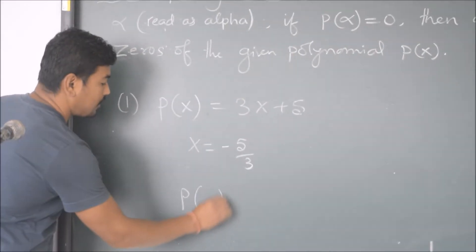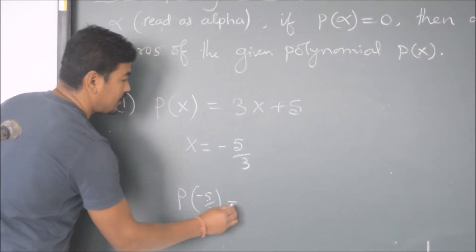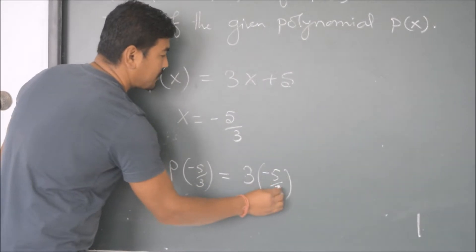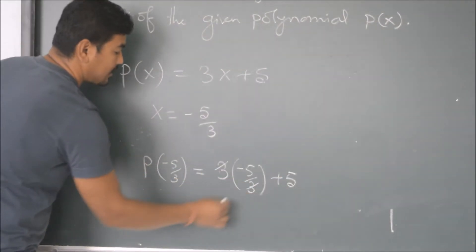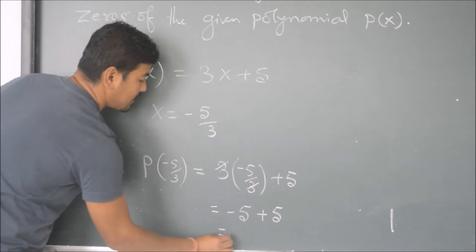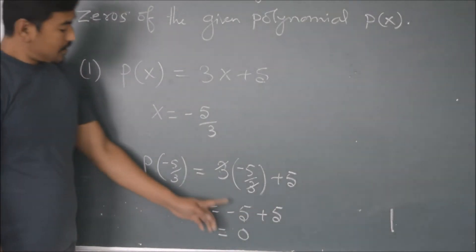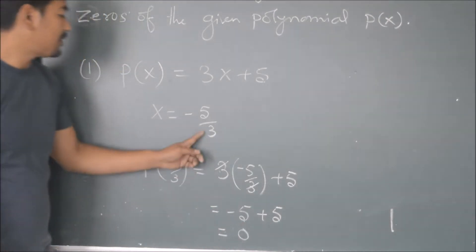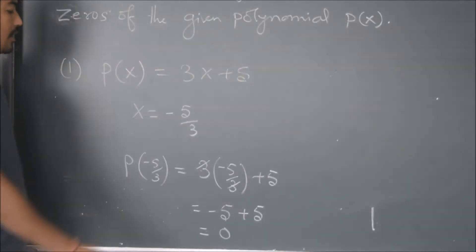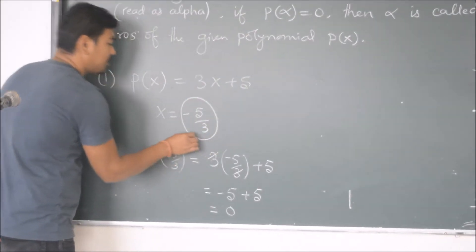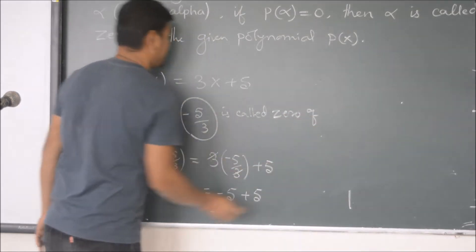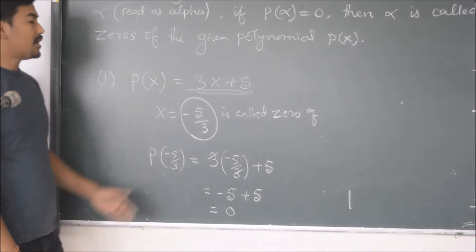So p(minus 5 by 3) equals 3 times (minus 5 by 3) plus 5. Here, 3 and 3 cancel, leaving minus 5 plus 5, which gives 0. We got 0, which means if we replace x by minus 5 by 3, the value of the polynomial reduces to 0. Therefore, minus 5 by 3 is called the zero of the given polynomial.